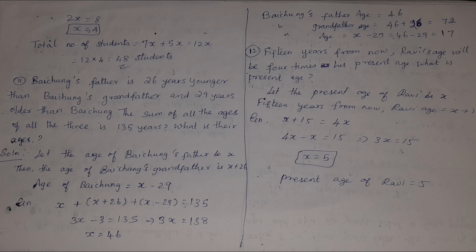Twelfth problem: 15 years from now, Ravi's age will be 4 times his present age. What is the present age? Let present age be x. Then x + 15 = 4x. Solving: 3x = 15, x = 5. So Ravi's present age is 5 years.